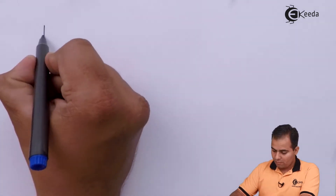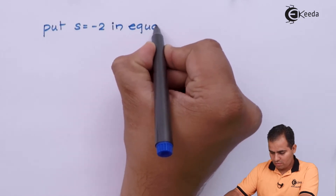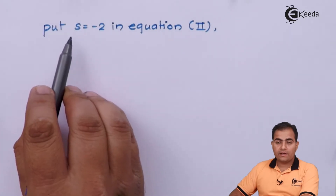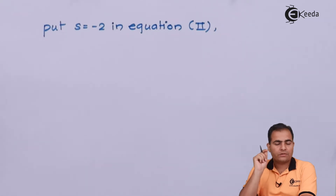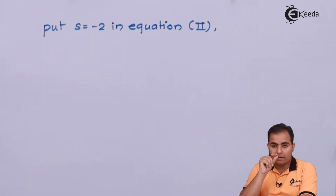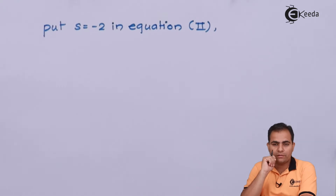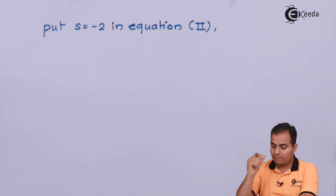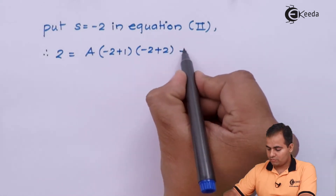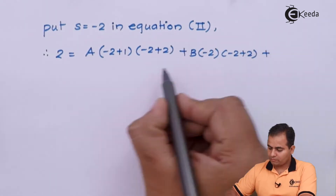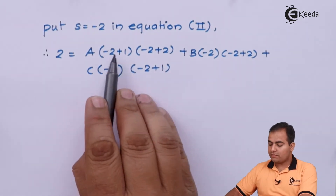Similarly, we will calculate the value of C. In equation number 1, the denominator of C is S plus 2. So equate S plus 2 equal to 0, giving S equals minus 2. We have to replace all S in equation number 2 by minus 2.